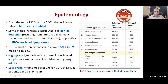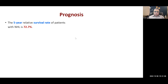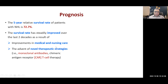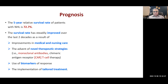Non-Hodgkin lymphoma is the seventh most common cancer, with about 80,000 cases per year in the USA. The five-year survival rate is about 73%, and it has improved over the years due to improvement in medical and nursing care, new drugs, novel therapeutic strategies including monoclonal antibodies, CAR T-cell therapy, use of biomarkers of response to therapy, and implementation of tailored or personalized treatment for patients.